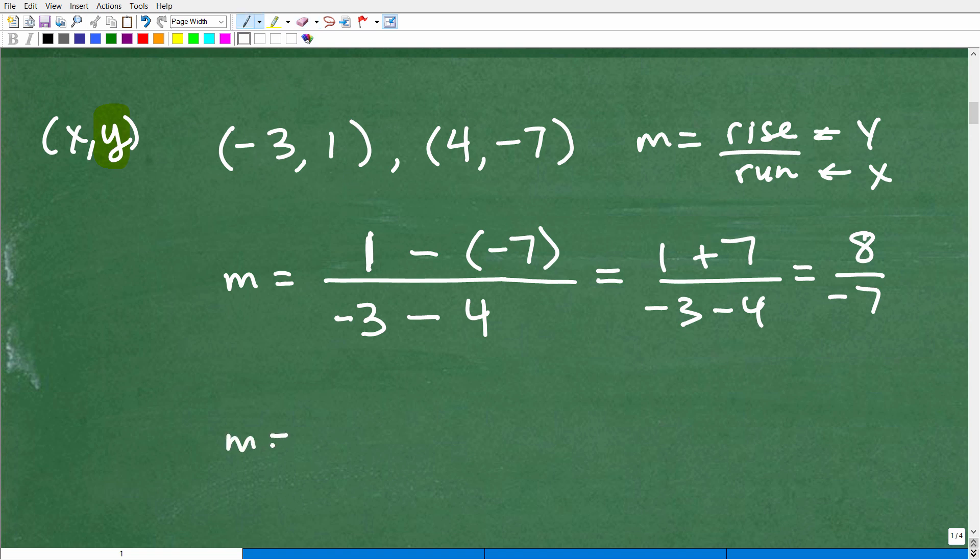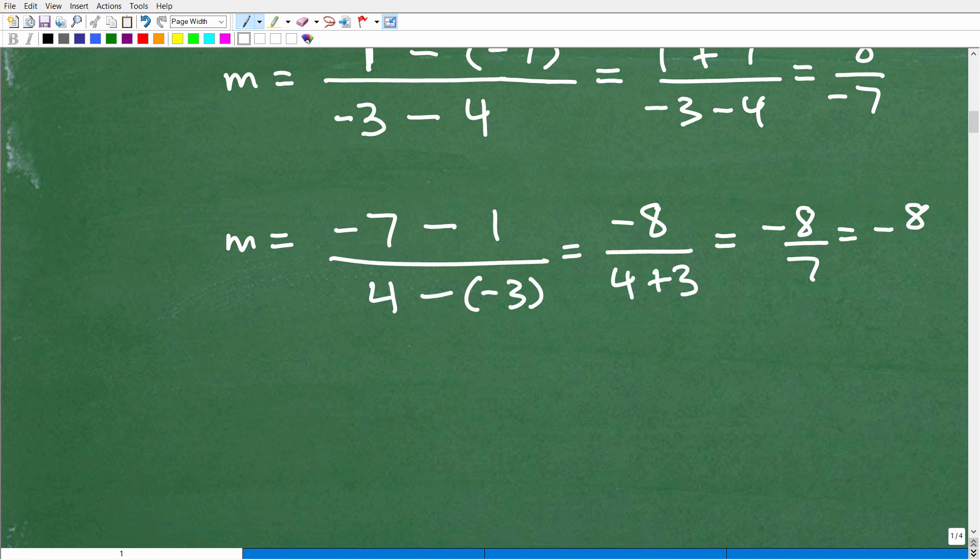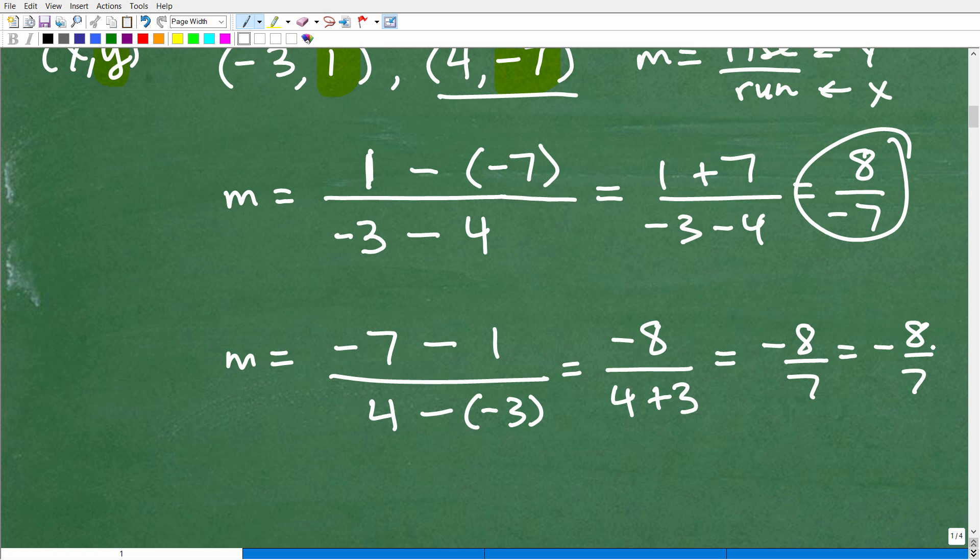Now let's take a look at this problem from another angle and just show you that this works using the other points information just as well. Let's calculate the slope again. But this time, let's start with this point's information. I'm going to underline that point. And that's just a reminder for me that I'm going to use this point's information first. So this would be negative seven minus one over four minus a negative three. So negative seven minus one. That is going to be negative eight. Four minus minus three. That is going to be four plus three. So I end up with negative eight over seven, which is still equivalent to negative eight over seven. So you can see how this works both ways if you understand this completely.